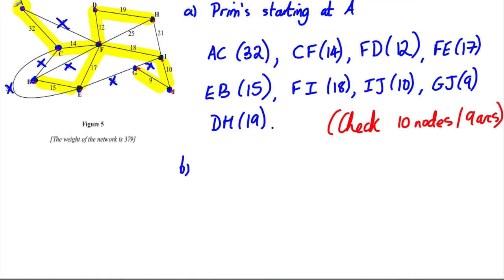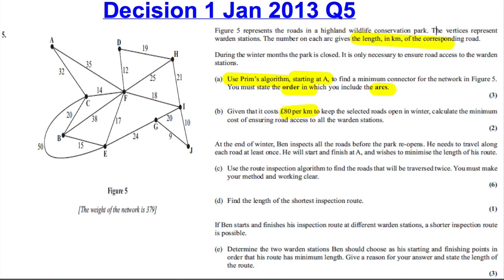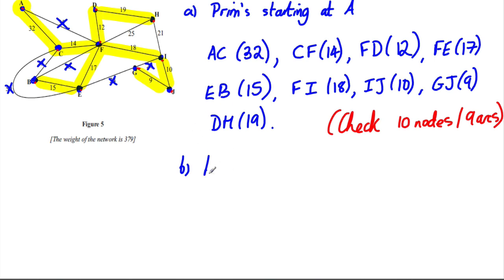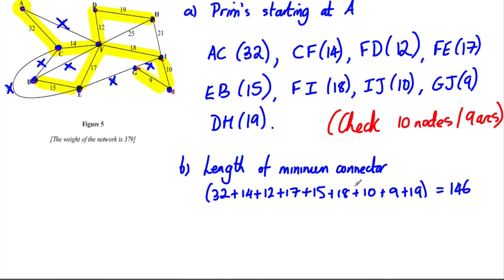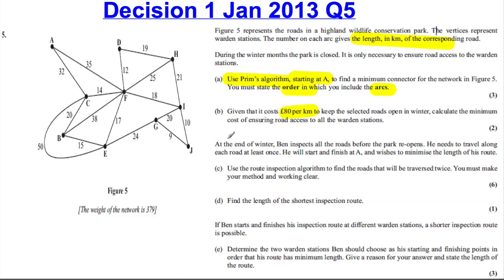Now, part B is saying, well, given that it costs £80 per kilometer to keep it open, find the minimum cost of ensuring the roads are open. So we have to add these together. So firstly, length of minimum connector. And so we add up the 32 plus the 14 plus the 12 plus the 17 plus the 15 plus the 18 plus the 10 plus the 9 plus the 19. And we get ourselves 146. And for each kilometer, it's £80. So all we do is 146 multiplied by 80. And we get ourselves 11,680 pounds. And that's our answer to part B. And we're done.